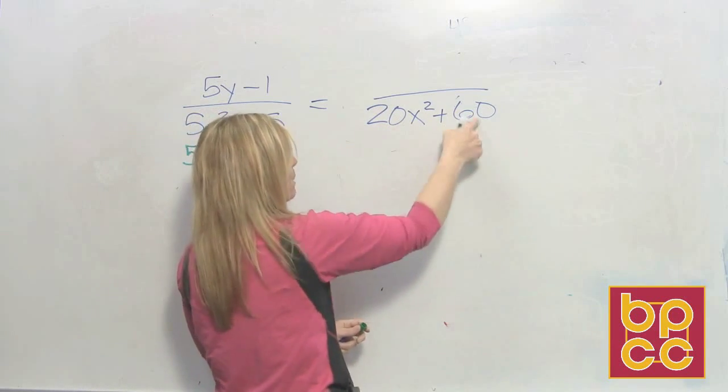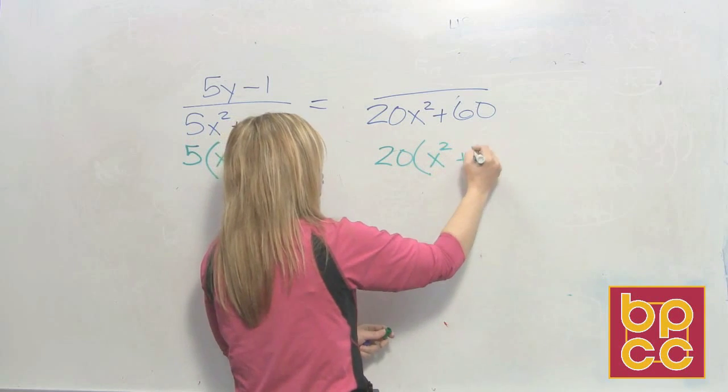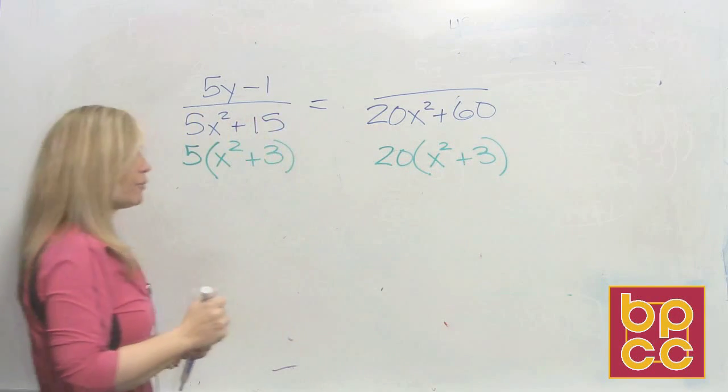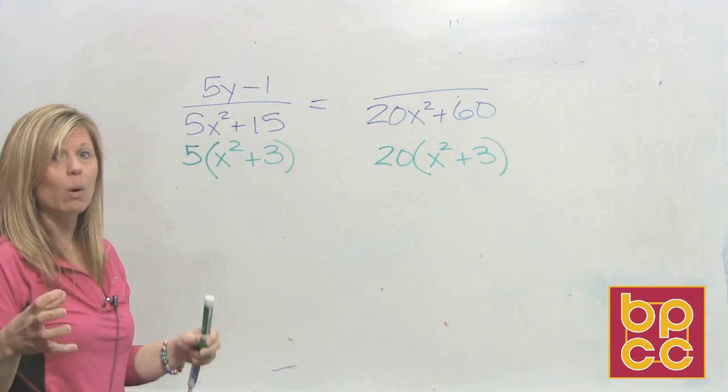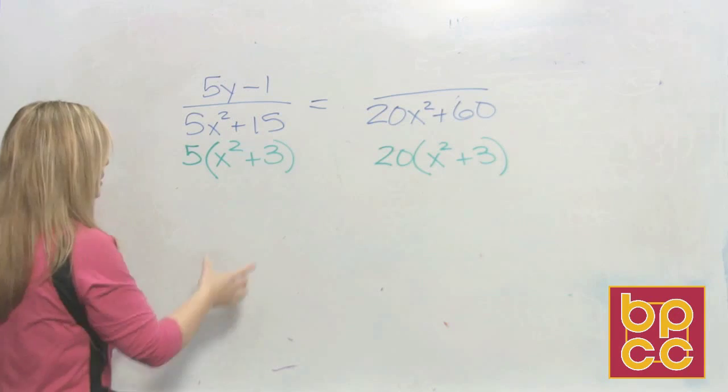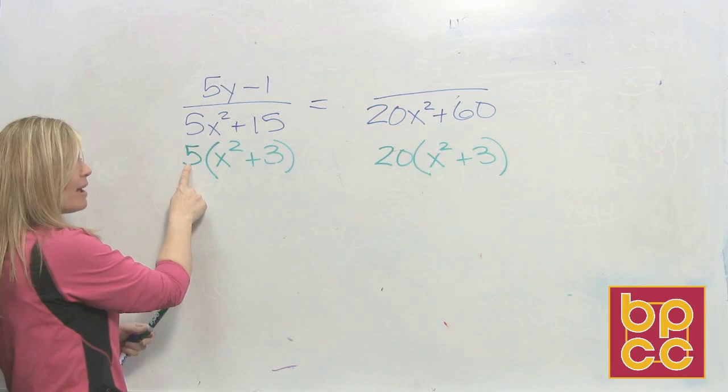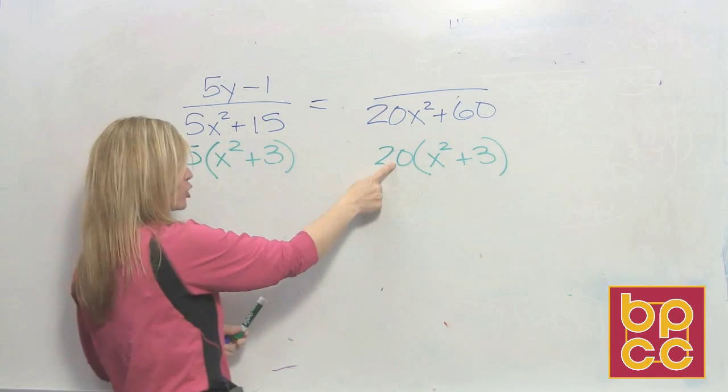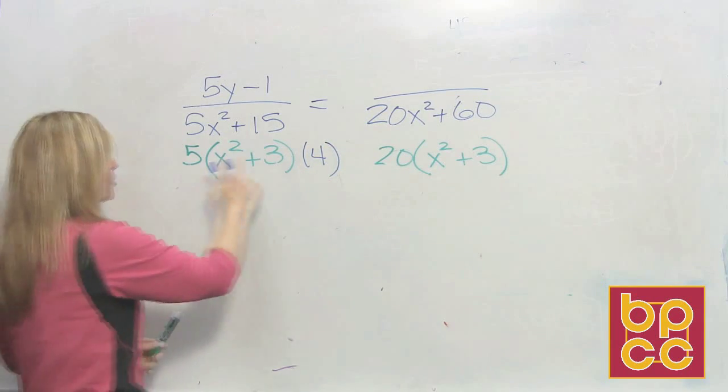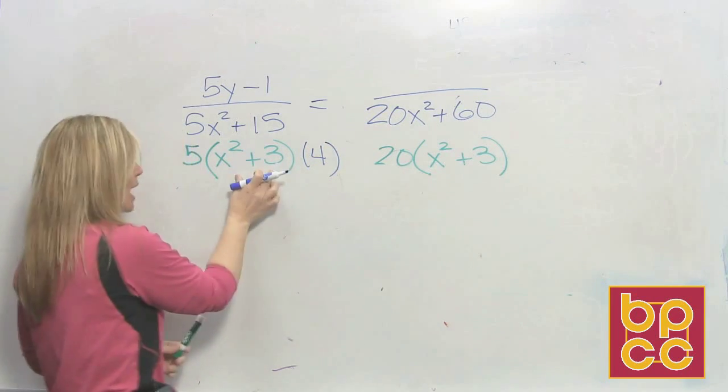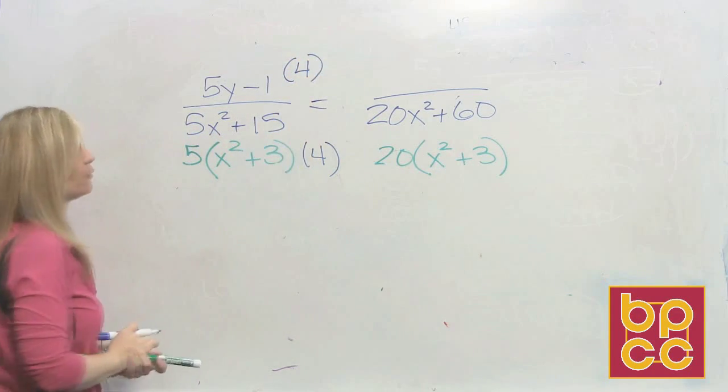If your denominators are already in factored form in lowest terms, it's a lot easier to see what we multiplied by. If you look, the x-squared plus three stayed the same. What we did is we took five and we multiplied it by what to make a twenty? Well, that's obvious. We multiplied by four. Five times four is the twenty, and then you would have had the x-squared plus three. So that's what we're going to have to multiply the numerator by to make an equivalent fraction. Four.